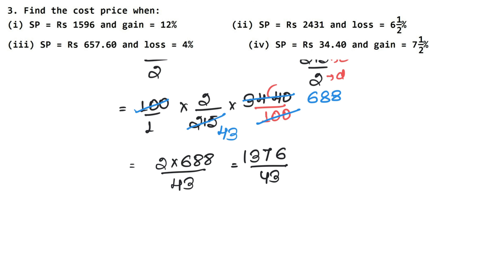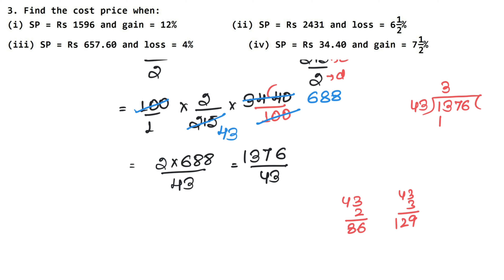Now dividing 1376 by 43: checking 43 twos are 86, 43 threes are 129. So 1376 divided by 43 — 17 minus 9 is 8, working through gives 32. So 43 into 32 is 1376. Therefore our cost price is Rs. 32. That is the answer.